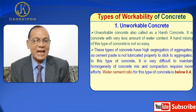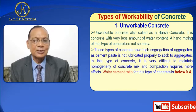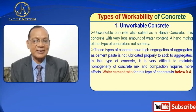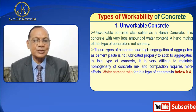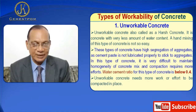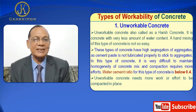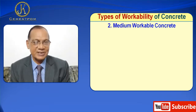In this type of concrete, it is very difficult to maintain homogeneity of the concrete mix and compaction requires more effort. The water cement ratio for this type of concrete is below 0.4. Unworkable concrete needs more work or effort to be compacted in place.